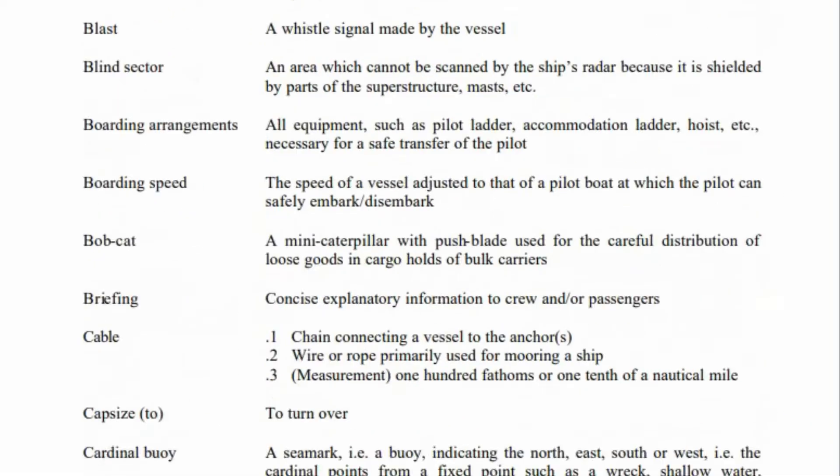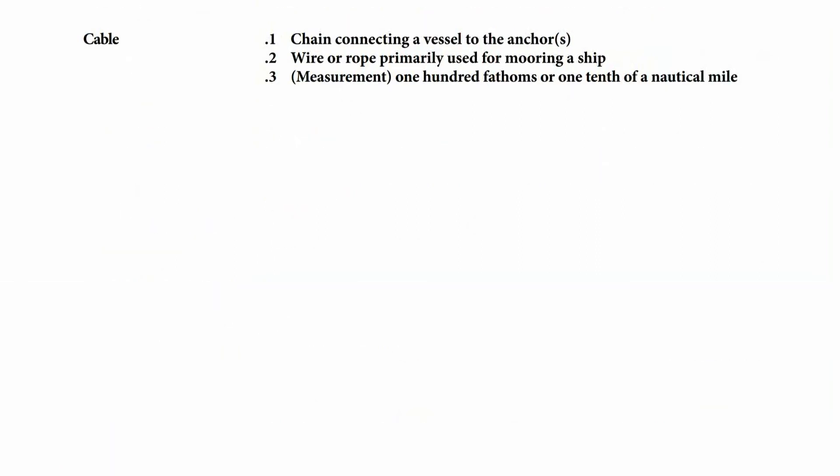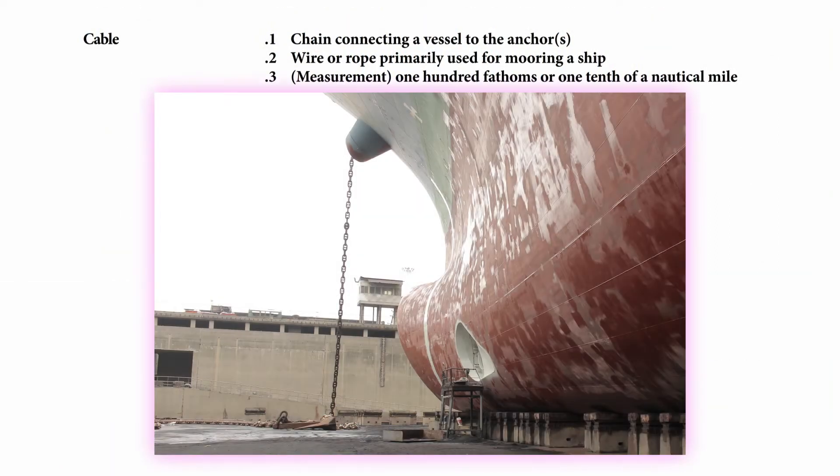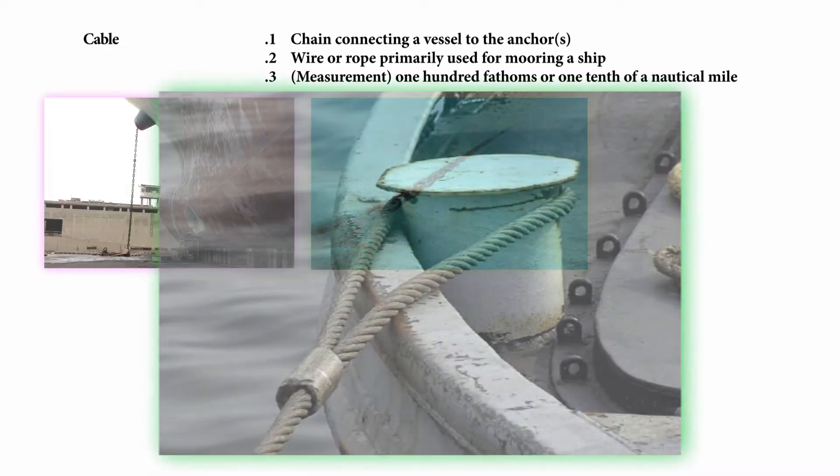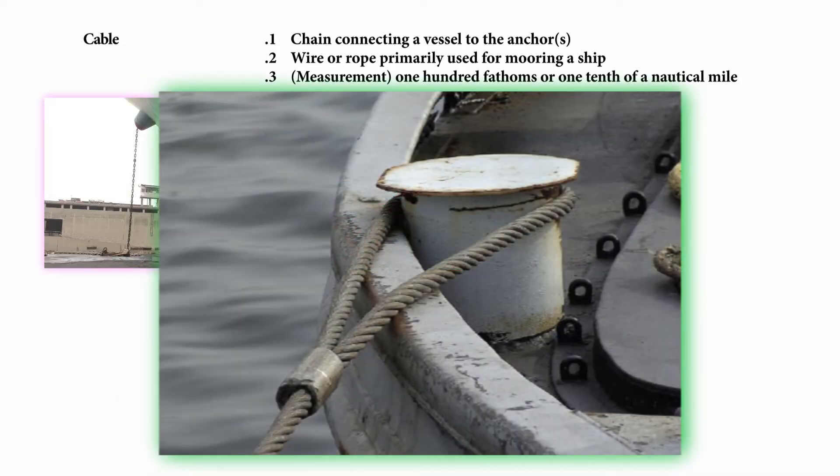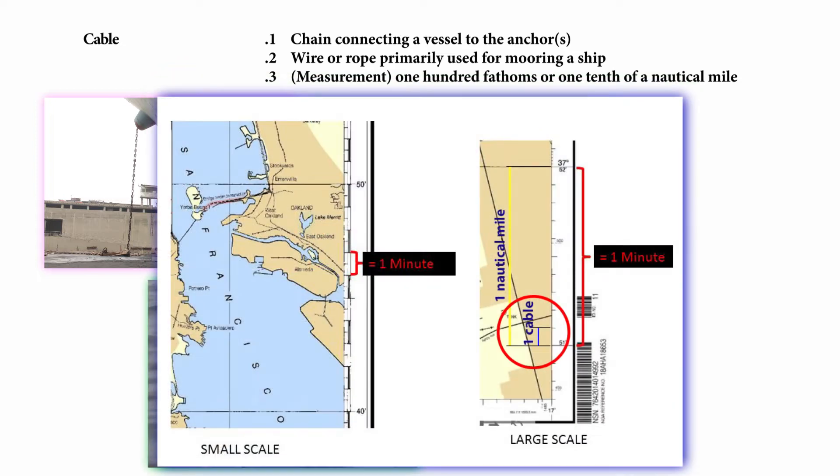Hello everyone, let's continue to learn maritime English with CMCP. Cable: this is a chain connecting a vessel to the anchor, and also this is wire or rope primarily used for mooring a ship, and also this is a measurement equal to 100 fathoms or one-tenth of a nautical mile.